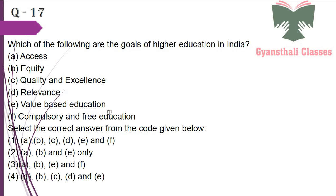Next question: Which of the following are the goals of higher education in India? Access — yes; equity — yes; quality and excellence — yes; relevance — yes; value-based education — yes; compulsory and free education — no, that is for primary education. So the answer is A, B, C, D and E.